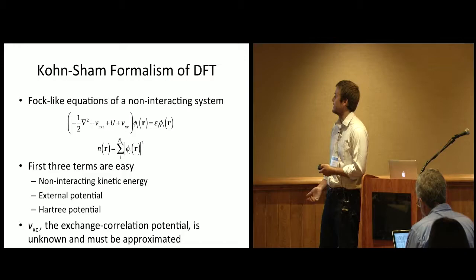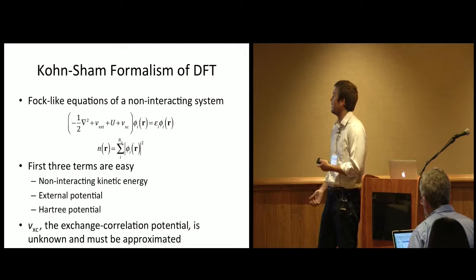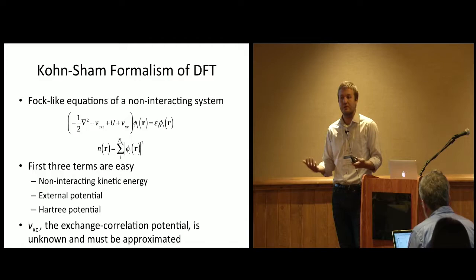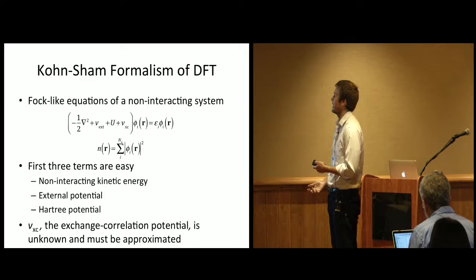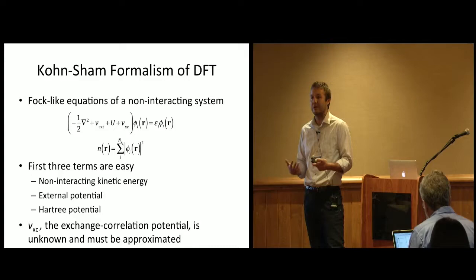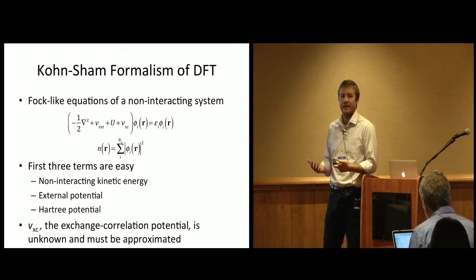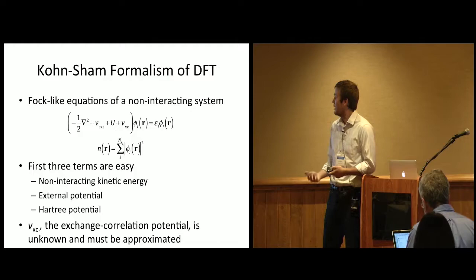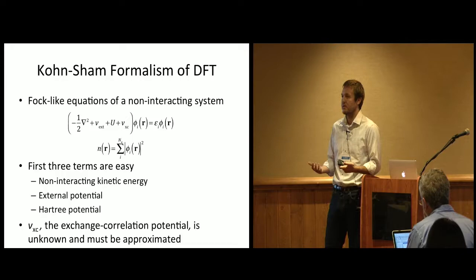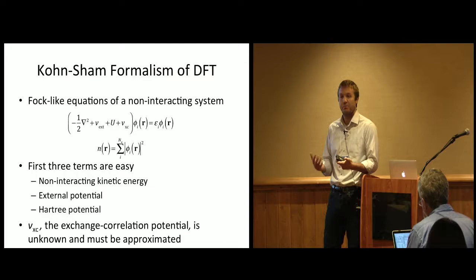This is just an eigenvalue expression where each of these four terms is a functional of the density. From this we get solutions, so these correspond to molecular orbitals. We can take the square and sum them up to get the density. Computationally, getting these first three terms are very easy. The first term is kinetic energy. The second term is the external potential. This third term is called the Hartree term, so it's classical electrostatic electron-electron repulsion. This fourth term is called the exchange correlation potential, and it includes all effects not included in the first three terms. DFT is a fundamentally exact theory, so all the many body effects of quantum mechanics are included in this VXC.